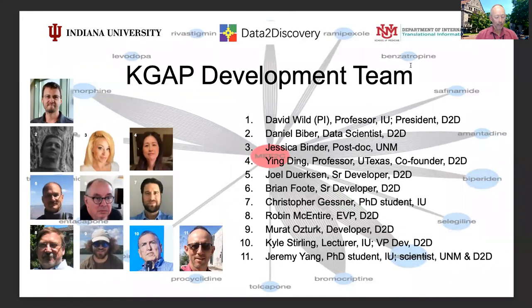In conclusion, combining LINCS and IDG via KGAAP has empowered the investigation of the molecular basis of complex diseases, and specifically the identification and prioritization of novel drug targets. The generality of the approach indicates that KGAAP is applicable to many disease areas in addition to Parkinson's disease. It has been a great pleasure to work with the team and I thank them all for their efforts and support.